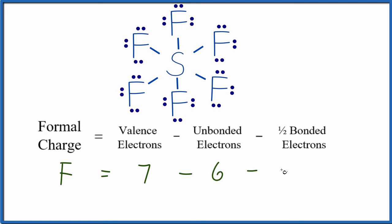Then we're going to take one-half of the bonded valence electrons. These are the ones in the chemical bond, and this line represents a pair of electrons, so we have two. Seven minus six, that's one; one minus one here equals zero. So the formal charge on the fluorine is zero.